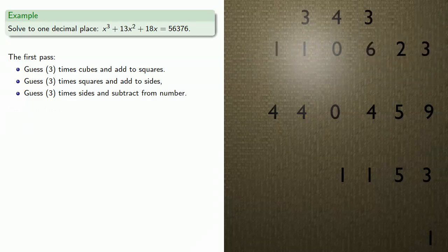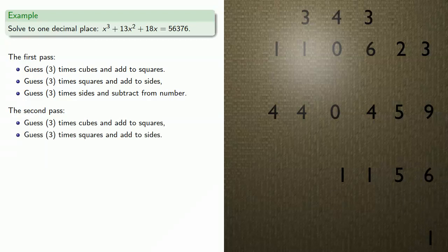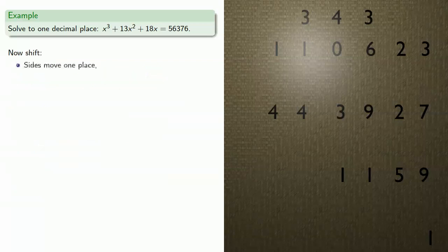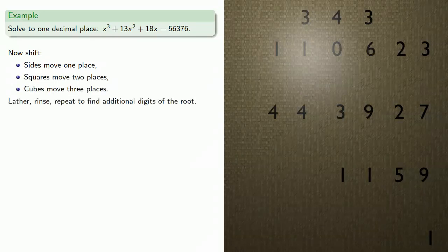Our second pass: guess times cubes and add to squares. Then guess times squares and add to squares, and stop. Our third pass: guess times cubes and add to squares, and stop. And shift: sides move one place, squares move two places, cubes move three places — and we can lather, rinse, repeat to find additional digits of the root.